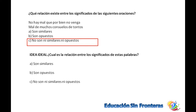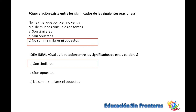Idea e ideal tienen relaciones entre sí. Son similares, porque la idea es algo que tú quieres, y lo ideal es lo que debería ser. Son muy relacionadas: lo ideal es que mañana llueva si estamos sembrando, y mi idea es que llueva mañana si estamos sembrando.